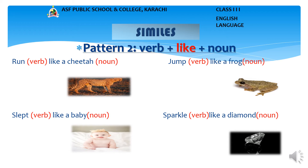Example 2: Slept like a baby. In this phrase, 'slept' is the second form of 'sleep' and 'baby' is a noun. This simile uses the word 'like' to compare slept and baby. Example 3: Jumps like a frog. Here 'jump' is a verb and 'frog' is a noun. This simile uses the word 'like' to compare jump and frog.